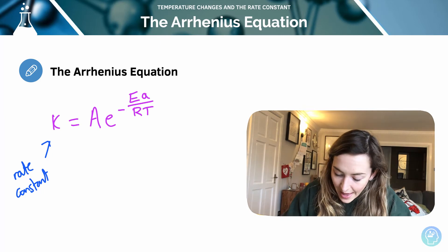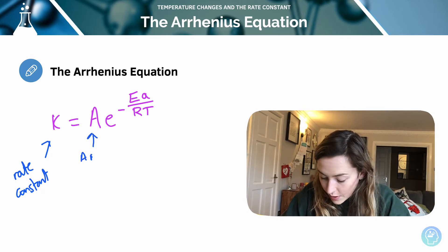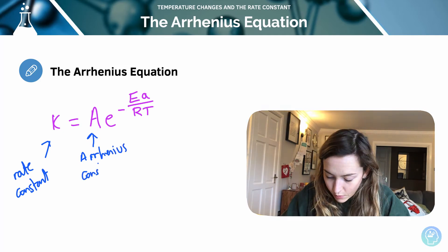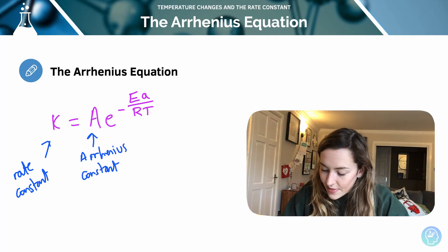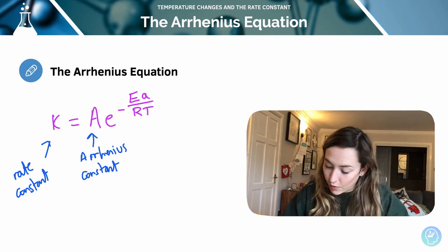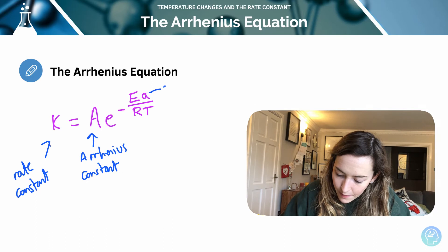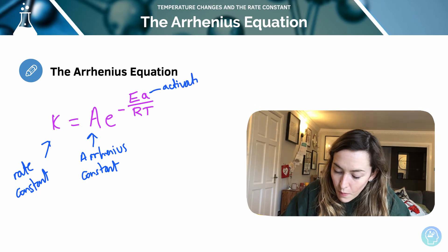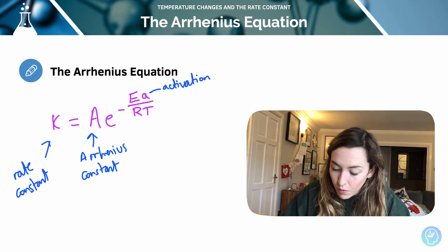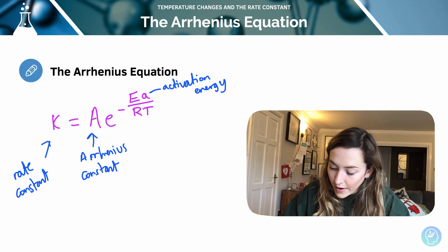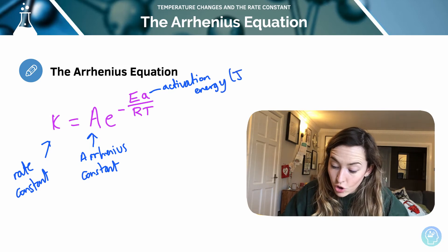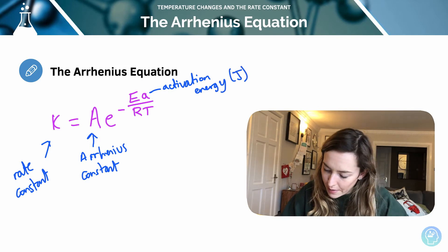We've got A, which is also a constant, the Arrhenius constant, bit difficult to fit that all in. And it's the same units as k for our Arrhenius constant. Then we've got our activation energy, Ea up here. And you may well have seen it referred to as Ea before. We've got our activation energy, that needs to be in joules when we're doing this calculation, that's really important.